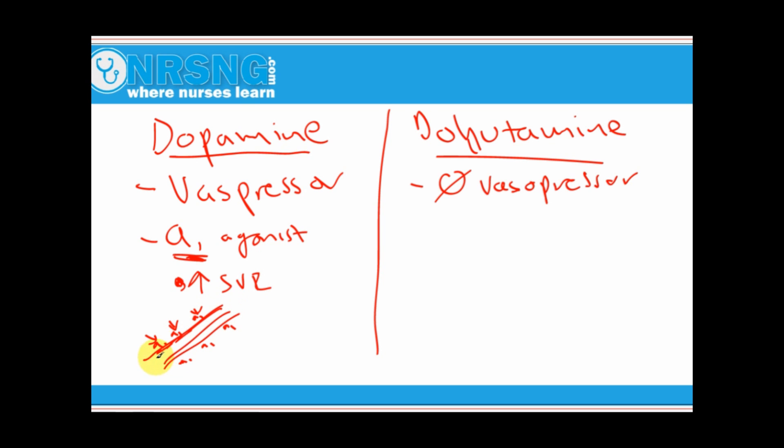As it acts on those alpha-1 receptors, these vessels are going to vasoconstrict and become tighter, and that's going to lead to increased systemic vascular resistance. It's going to increase that vessel squeeze.